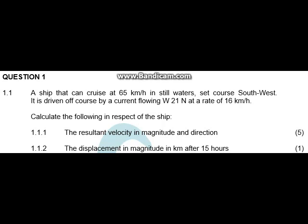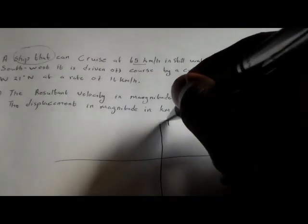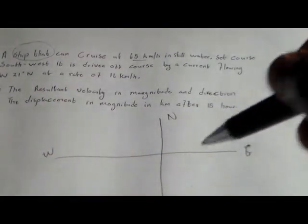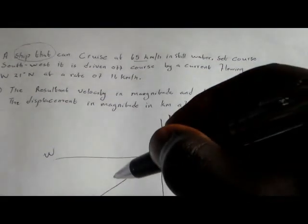We are concentrating on this ship, which can cruise at 65 kilometers per hour in still water. So if the water is stationary and the ship is set to coast southwest, let's draw the Cartesian plane. We have east, north, west, and south. If the ship cruises at 65 kilometers per hour southwest, that will be our first vector, at 45 degrees — in the middle between south and west.